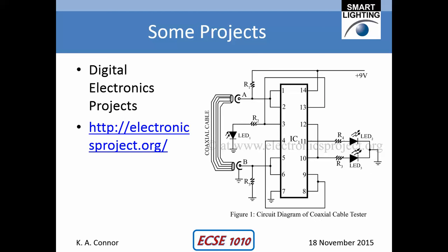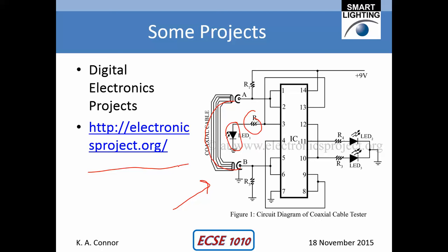So we've covered digital electronics and logic design very briefly. If you're interested in doing a digital electronic project rather than an analog one, you can just Google digital electronic projects. Here is a website with many kinds of options. This circuit here uses an integrated circuit — I think it's a combination of OR or NOR gates — and once it's powered with some LEDs and resistors and a connector for a coaxial cable, it will tell you whether the cable is good. It's a simple way of making a coaxial cable tester. So that's this topic and we'll see you in class.